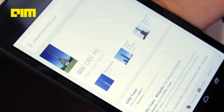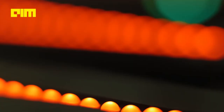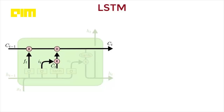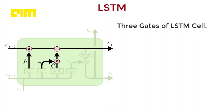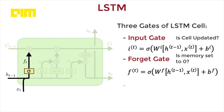To store, process, and leverage relevant memory, LSTMs are equipped with internal mechanisms called gates. Think of a gate as a mathematical expression which looks something like this. Each LSTM cell or block consists of three gates: input gate, forget gate, and output gate.